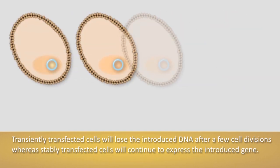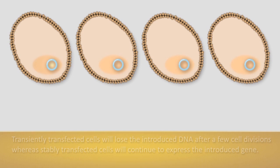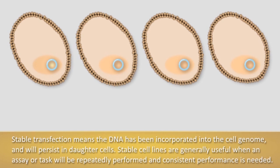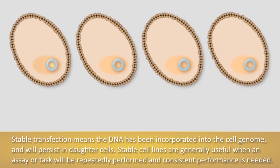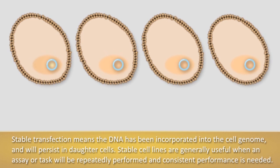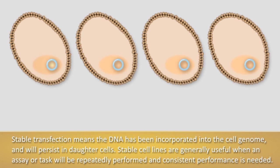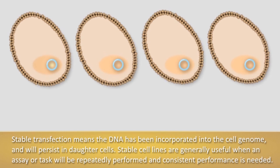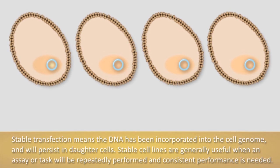Stably transfected cells will continue to express the introduced gene. Stable transfection means that the DNA has been incorporated into the cell genome and will persist in daughter cells. Stable cell lines are generally useful when an assay or task will be repeatedly performed and consistent performance is needed.